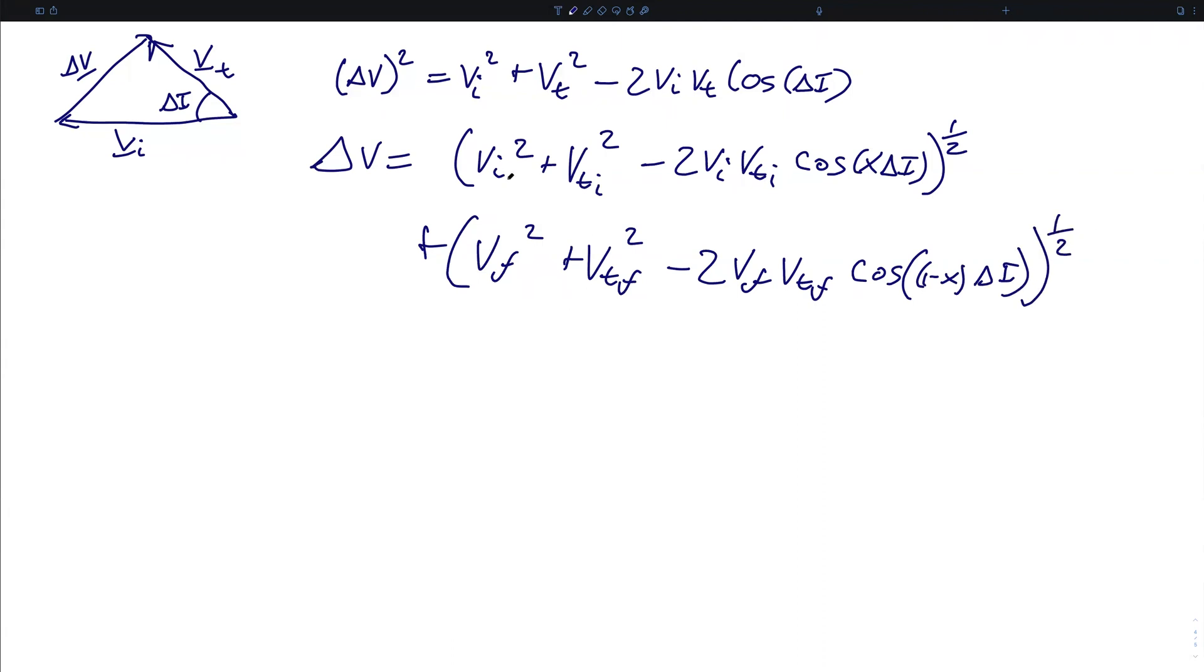where you will recall these VI, VTI, VF, and VTF terms from our original definition of the Hohmann transfer. This is the velocity on the initial orbit, this is the velocity on the final orbit, this is the velocity on the transfer orbit at the initial burn, and this is the velocity on the transfer orbit right before the final burn.